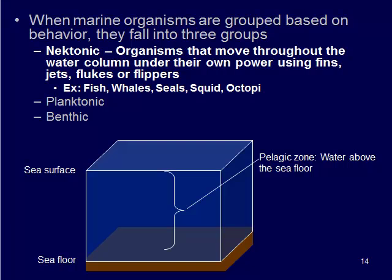The first group is nectonic organisms. These live in the water column above the sea floor, and they're moving throughout the water column under their own power — they can actually migrate from place to place. Things like fins, jets, flukes, flippers — whales, fish, octopi, squid — these are all organisms that can move from one place to another in the ocean. They'll go from one edge of an ocean to another, or migrate to deeper depths and come back up while feeding or reproducing.